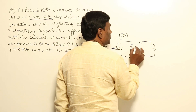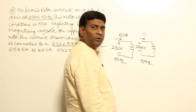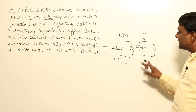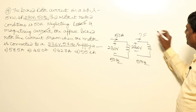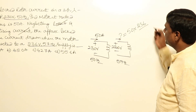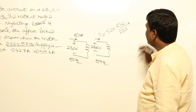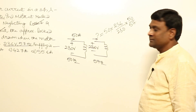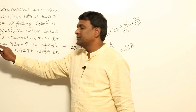At 236 V and 57 Hz, the locked rotor current changes as follows: if voltage increases, current increases; if frequency increases, reactance increases and current decreases. So the new current = 50 × (236/230) × (50/57) = 45 amperes. The answer is 45 amperes.